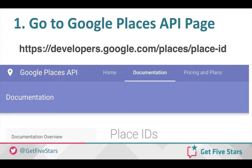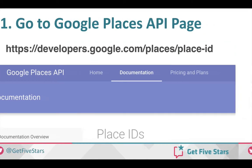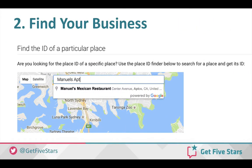So step number one: if you go to this Google Places API page — the URL is right here — this will take you to a place where you can search for your business. You do a search for your business, and Google will start automatically populating search results, and from here you can find your business within Google.